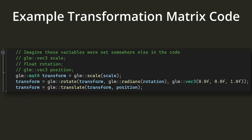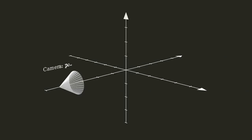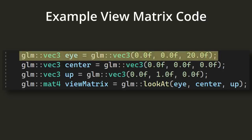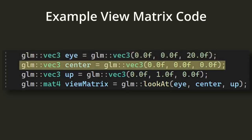Now we need a view matrix. The view matrix is very important for determining where your camera is located in the game world. For example, if we wanted a camera located at (0, 0, 20) looking towards the world origin (0, 0, 0), we could define a view matrix using GLM's lookAt function. You define the eye — the camera's position in world space — the center, which is where the camera is pointed, and an up vector. The up vector is important because in 3D space you need to know which direction points up; without it, the camera could be oriented in infinite ways.